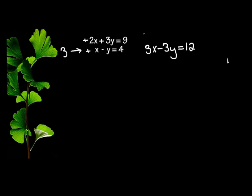Now on the top, I'm going to leave that one alone. 2x plus 3y equals 9. Now when I add down, 2 plus 3 is 5, so that's 5x.